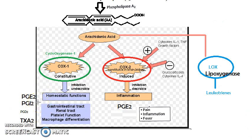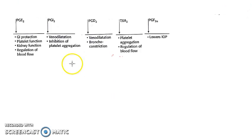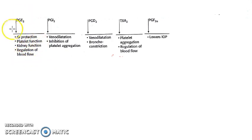What does each prostaglandin do? Prostaglandin E2 mainly handles homeostasis: GI protection, kidney function, and regulation of blood flow. These are the homeostatic functions of PGE2.